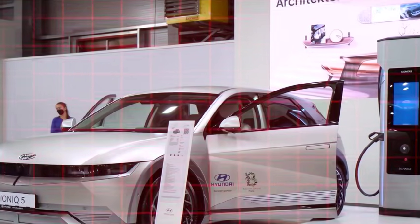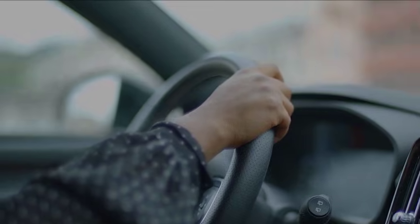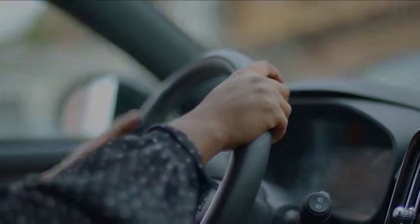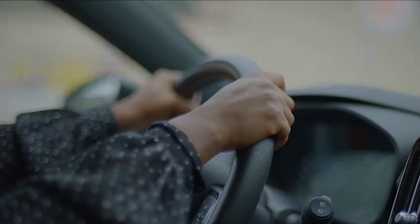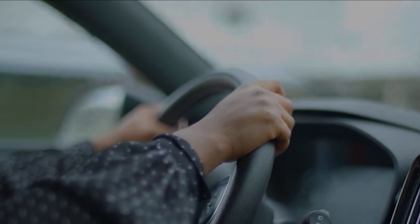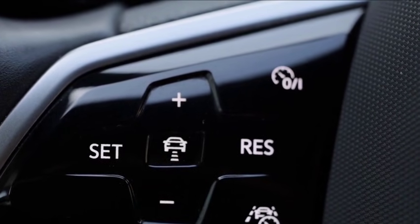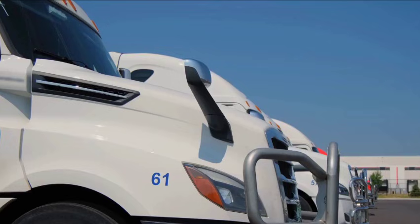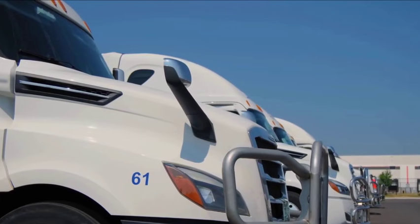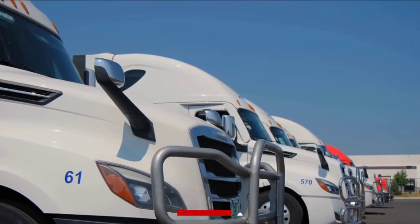The bottom line: Auto Stop Start systems are designed to enhance fuel efficiency and reduce emissions by automatically shutting off the engine when the vehicle is stationary and restarting it when needed. While this feature can lead to slight fuel savings, particularly in heavy city traffic with frequent stops, it comes with notable drawbacks. The constant restarting puts additional strain on the battery, requiring high-performance AGM or EFB batteries that are more expensive and wear out faster than standard ones. It also increases wear on the starter motor and other engine components, potentially leading to higher maintenance costs over time.